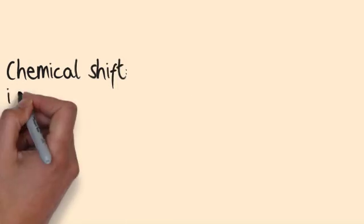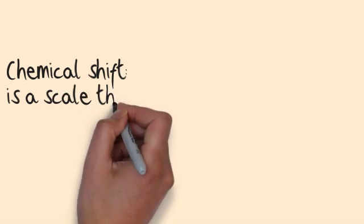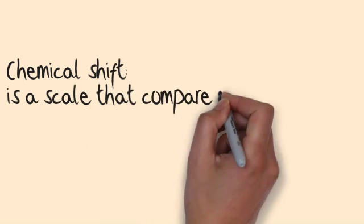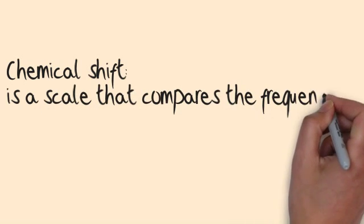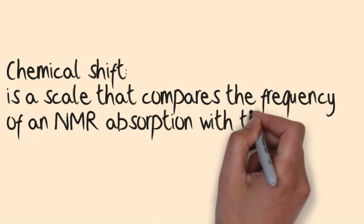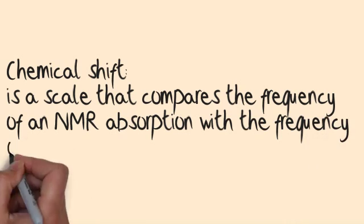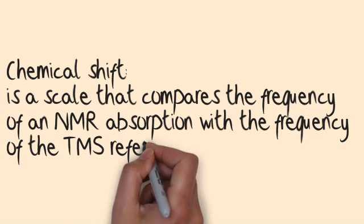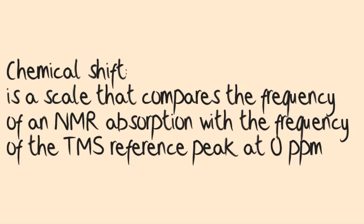Chemical shift. This is a scale that compares the frequency of an NMR absorption with the frequency of the TMS reference peak at 0 ppm.